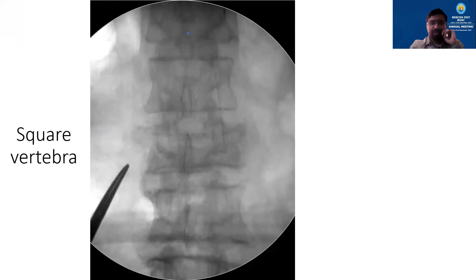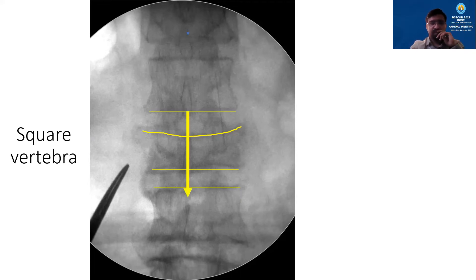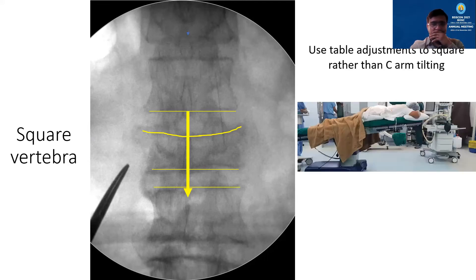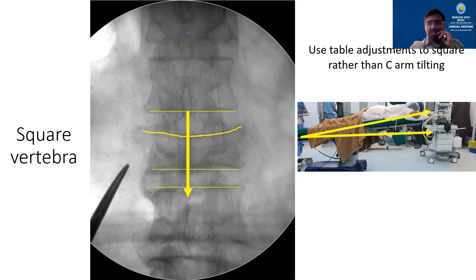Before starting, take a good AP view. A basic rule of any AP imaging of the spine is you have to square the vertebra. Many times the vertebra is already fractured so you don't see clear end plates — use the lower or upper end plate, whichever is intact on the same vertebra, or use the end plates of adjacent levels. Make sure the spinous process is in the midline with no rotation. Instead of tilting the C-arm for AP view every time, I adjust the table to the position I want so the C-arm remains static — this saves time for the technician.